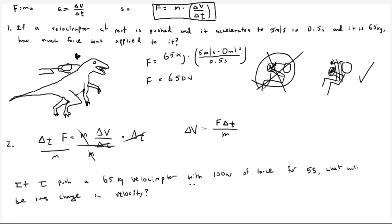If I push a 65 kilogram velociraptor with 100 newtons of force for 5 seconds, what will be its change in velocity? My force is 100 newtons, the change in time is 5 seconds, and it had a mass of 65 kilograms. That's 500 divided by 65, which gives you something like 7.7 meters per second. Which means that if I use 100 newtons of force for 5 seconds pushing this velociraptor, it'll be moving 7.7 meters per second faster by the time I'm done pushing.